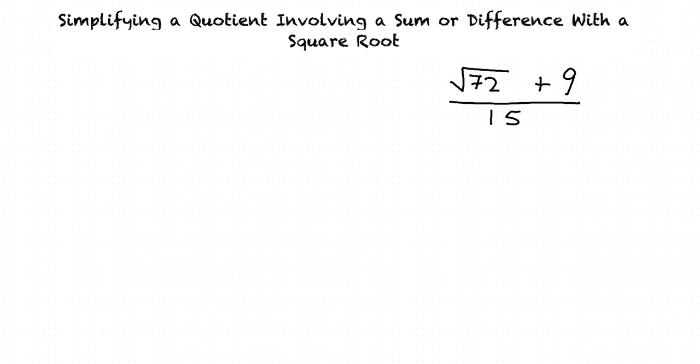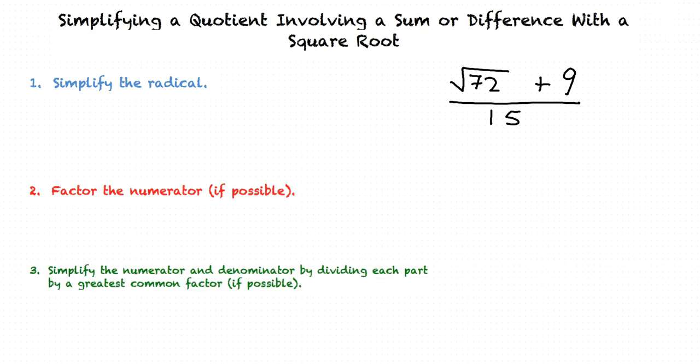When we see this sort of problem, the steps we want to take to simplify it are as follows. Step 1: simplify the radical. Step 2: factor the numerator, if possible. And Step 3: simplify the numerator and denominator by dividing each part by a greatest common factor, also if possible.